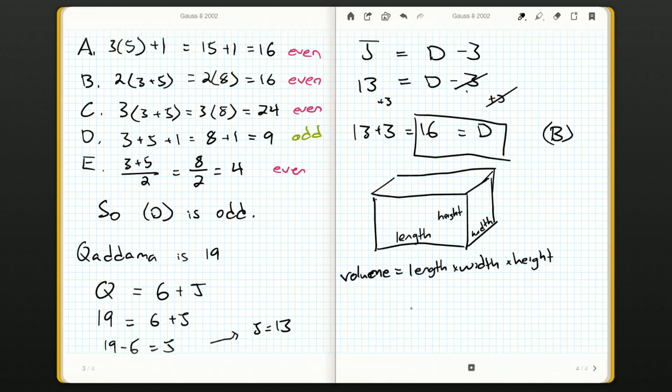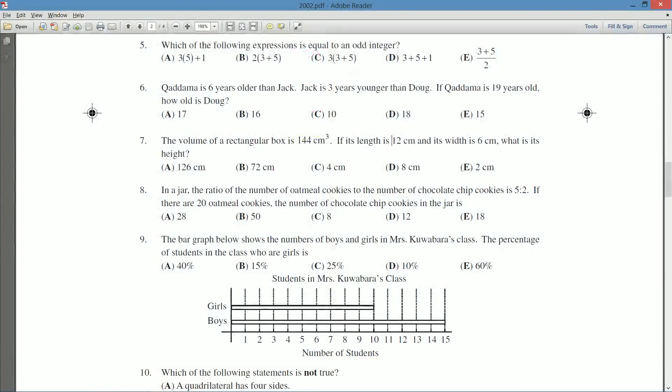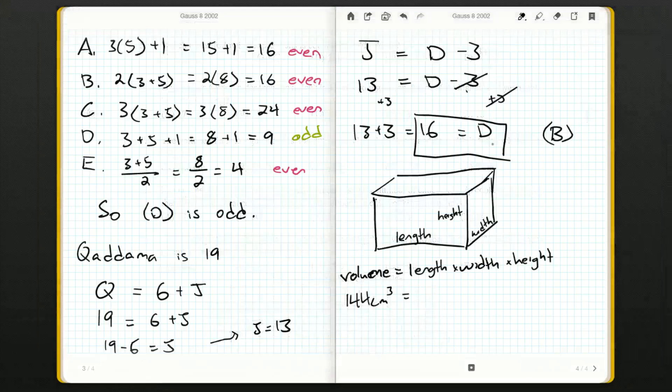Now we're told what the volume is: 144 centimeters cubed. And we are told the length is 12 centimeters and the width is 6 centimeters. So we can just go ahead and plug those into this equation.